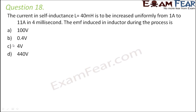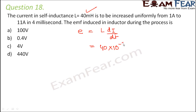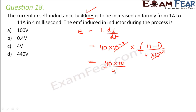Question number 18. Self inductance L equals 40 millihenry. Current increases uniformly from 1 ampere to 11 ampere in 4 milliseconds. EMF equals L·dI/dt = 40×10⁻³ × (11−1)/(4×10⁻³) = 40×10⁻³ × 10/(4×10⁻³) = 40×10/4 = 100 volts. Option A is correct.